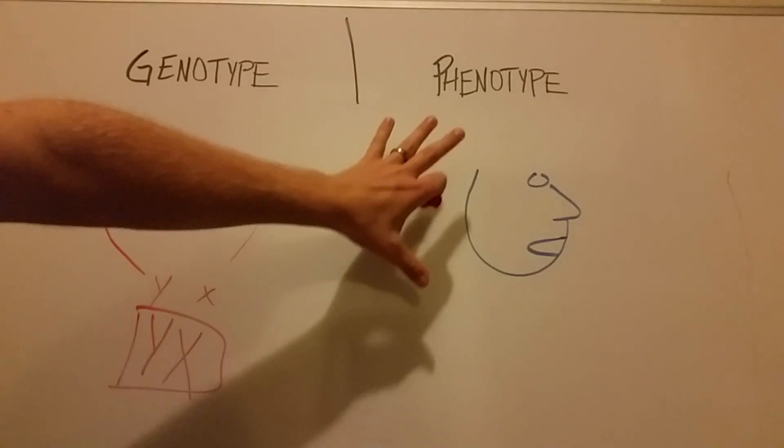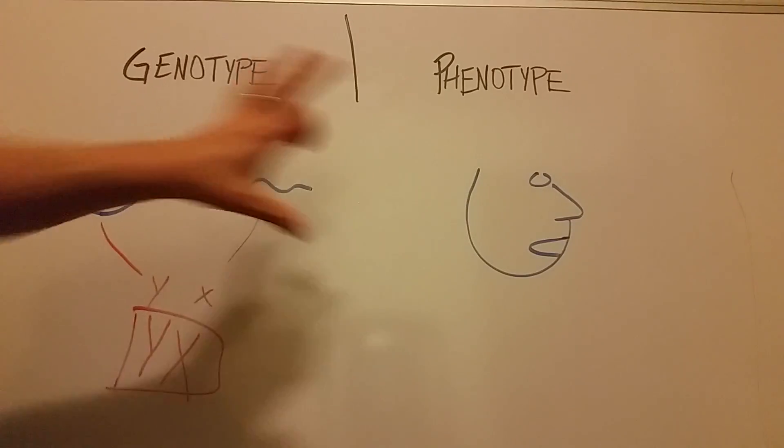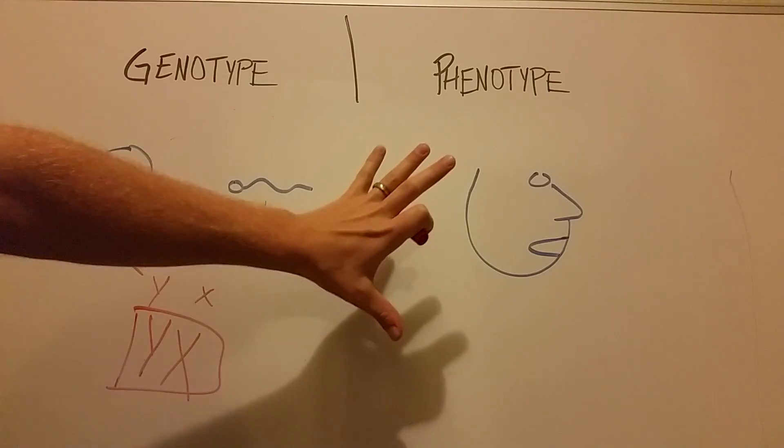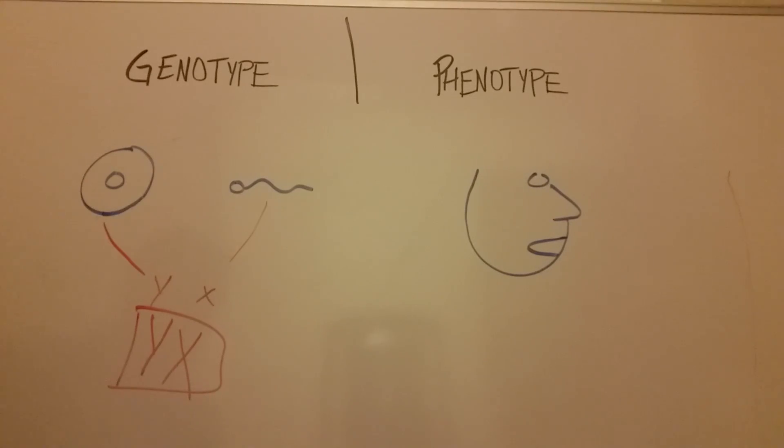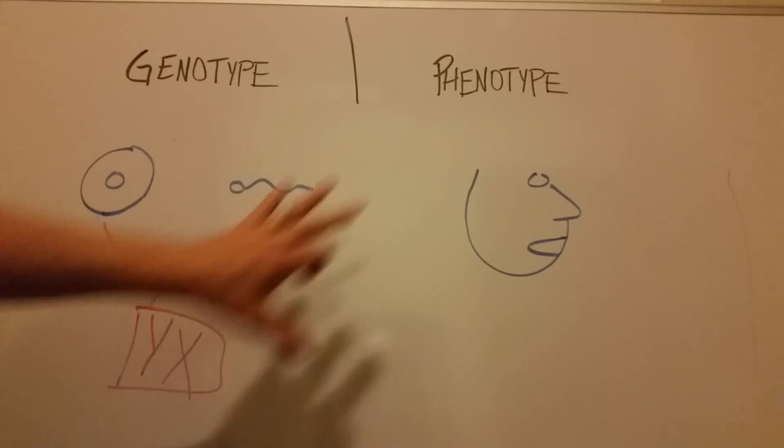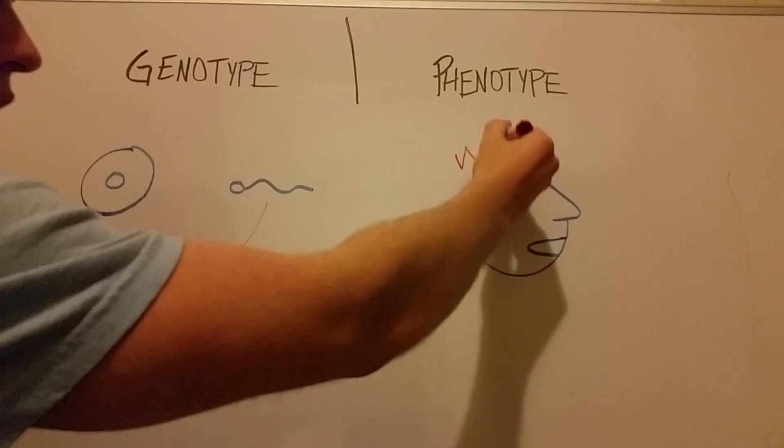So now we go over here to phenotype, we're going to kind of change gears a little bit because phenotype is the genes or the genetic material that actually manifests, that actually affects us. It's the dominant genes if you've heard of that term in this simple example. And so like we were just talking about, let's say that Y is the more powerful or the dominant gene and that's for red hair color. That means that our phenotype will be red hair.